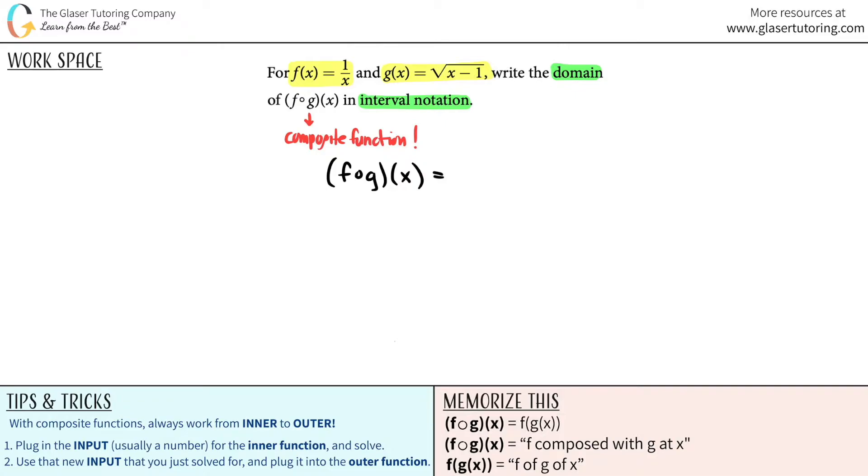So this equals f of g of x. Now, you can clearly see that this is the inner function, because it's the innermost with parentheses. And the f function is the outer function. With composite functions, you always work from inner to outer, meaning the parentheses. And the first thing with composite functions is you're going to put in an input for the inner function and solve.